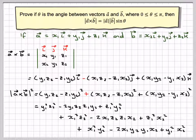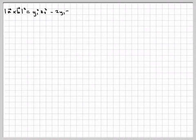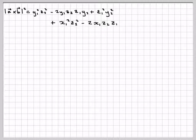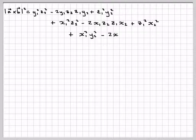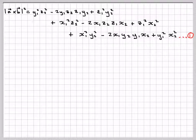So (a minus b) all squared is a² minus 2ab plus b². Writing that all out again, we're going to call this equation number one — this is the magnitude of the cross product squared.